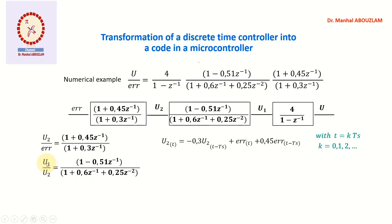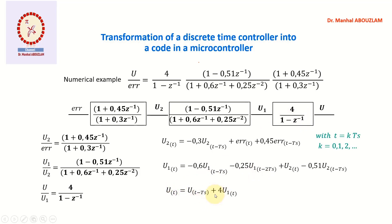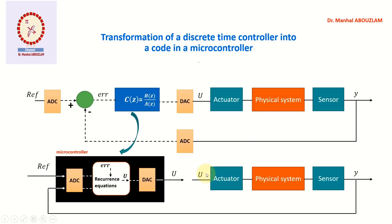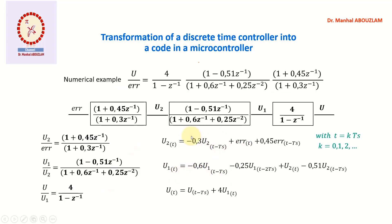For the block equal to u1 over u2, using the cross product we obtain the corresponding recurrence equation. Note that u1 times z^-2 gives the variable at time t − 2·Ts. We then write the recurrence equation for the remaining block. We write the recurrence equations in order, starting with this block and continuing. We now have the recurrence equations that allow us to obtain the control input u from the error.